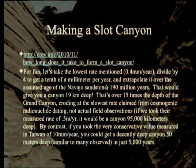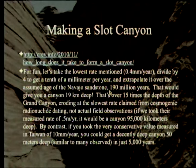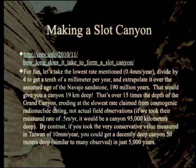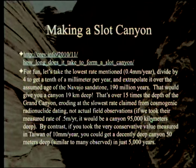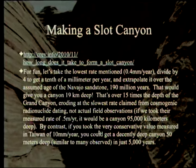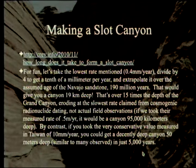That's over 15 times the depth of the Grand Canyon — eroding at the slowest rate claimed from cosmogenic radionuclide dating, not actual field observations. If you take their measured rate of 0.5 mm per year, it would imply a canyon 95,000 kilometers deep. By contrast, taking the very conservative rate of 10 mm/year measured in Taiwan, you could actually get a decently deep canyon — 50 meters deep — in just 5,000 years.